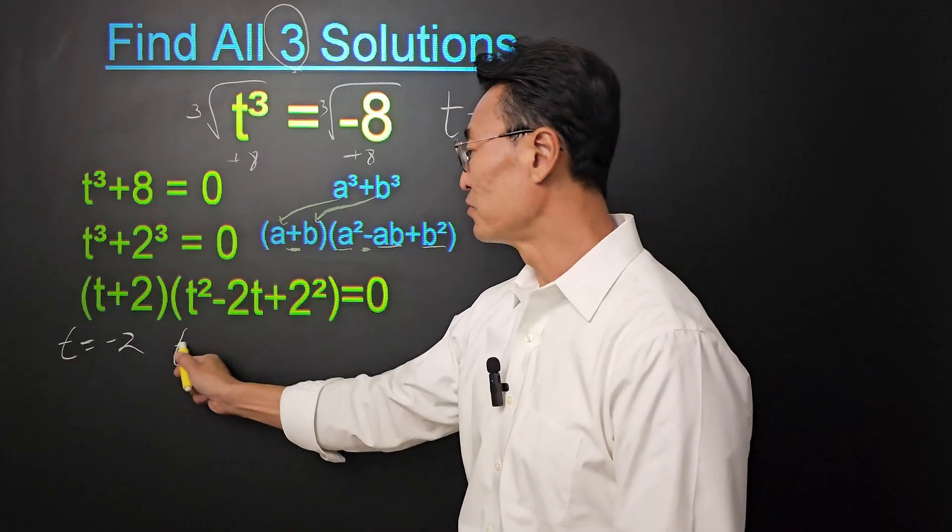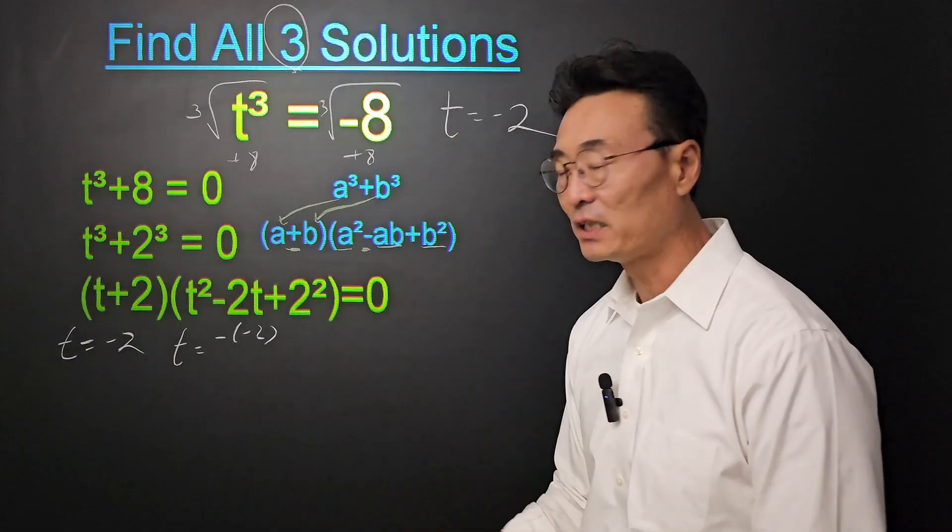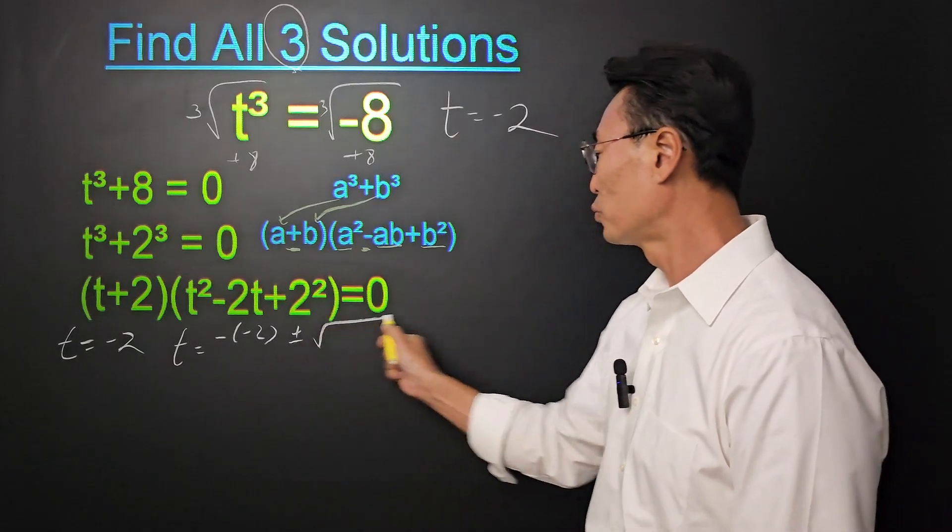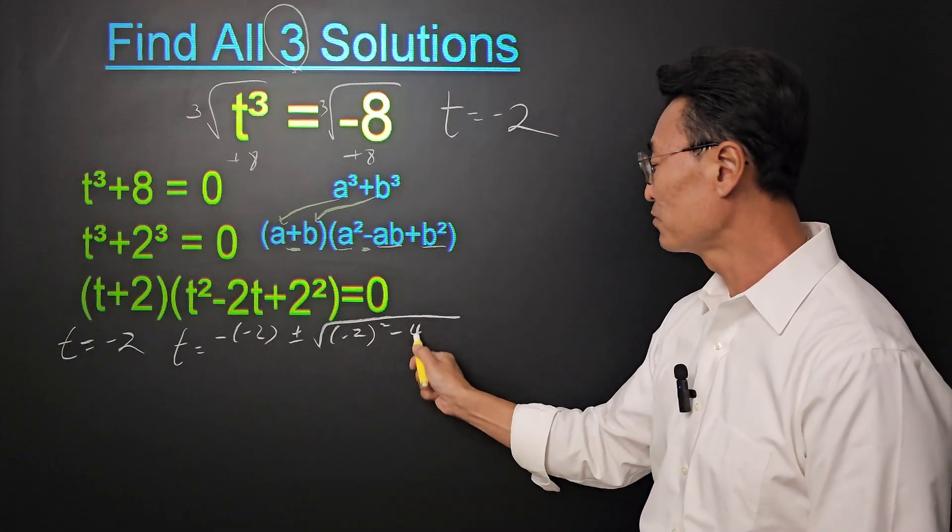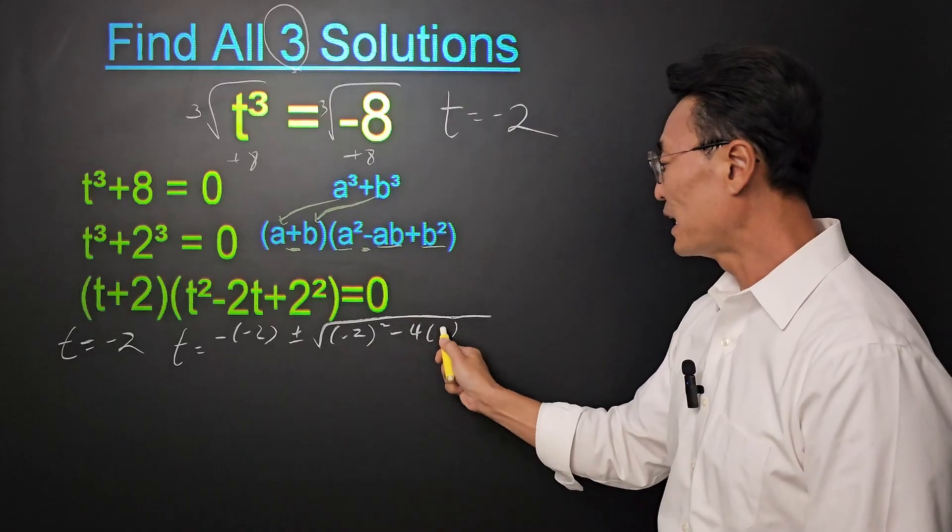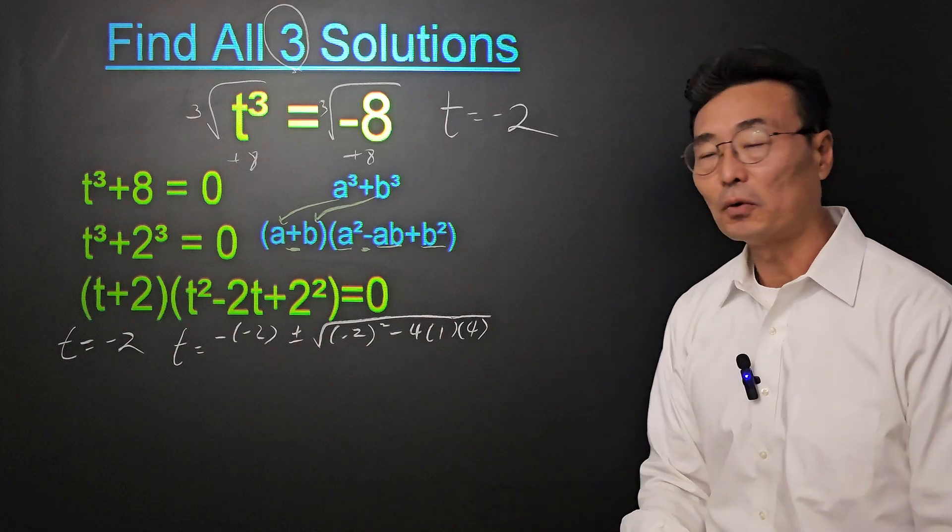So if we're going to be using the quadratic formula, it's going to be negative b, or negative of negative 2, plus minus square root of b squared, which is negative 2 squared, minus 4 times a, which is 1, times c, which is 4.